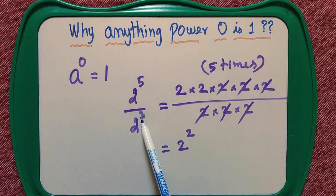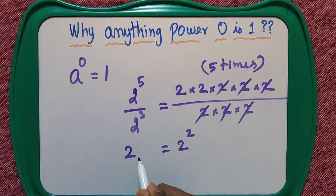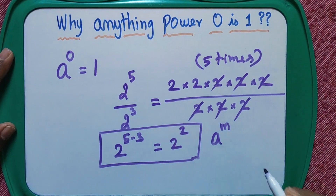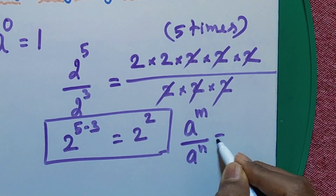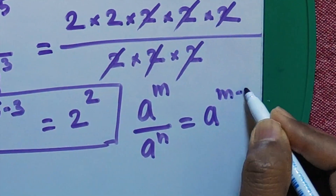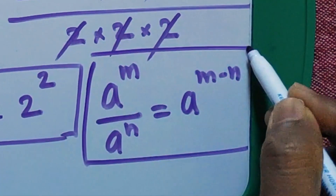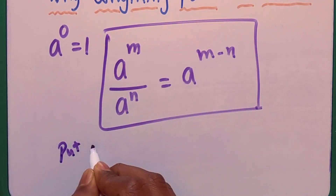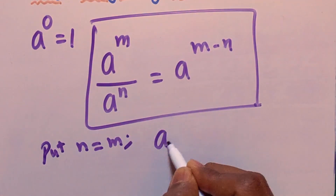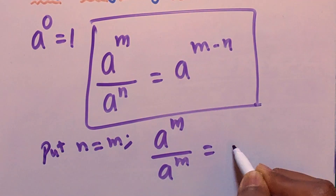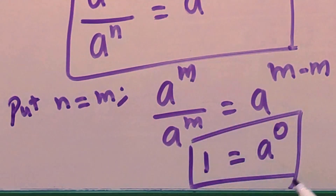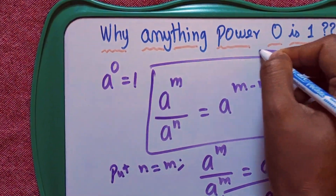We can see the powers: 5 minus 3 is 2, so we can write this as 2 power (5 minus 3). In general, a power m divided by a power n equals a power (m minus n). This is the generalized formula. By putting n equal to m, we get a power m divided by a power m, which gives a power (m minus m) equals a power 0, and since anything divided by itself is 1, a power 0 equals 1.